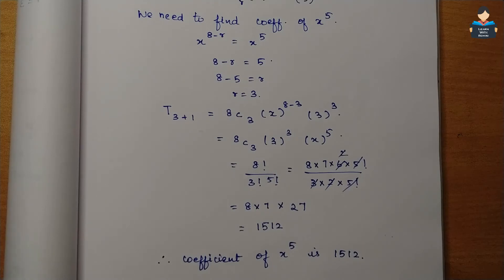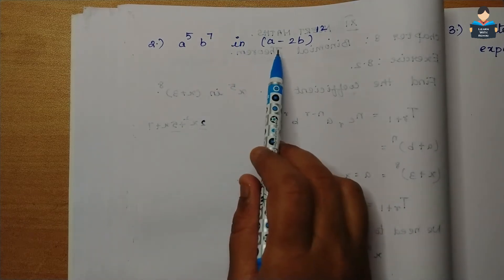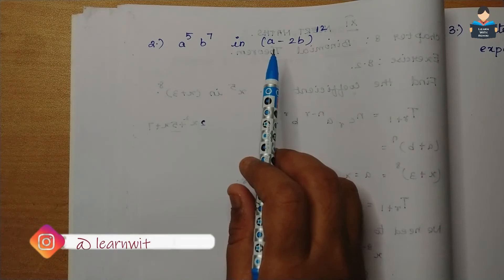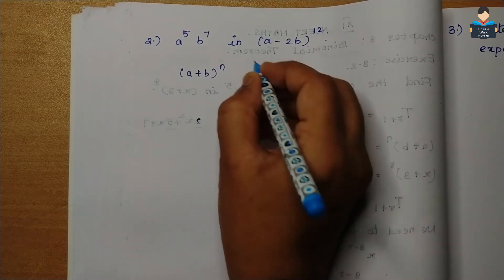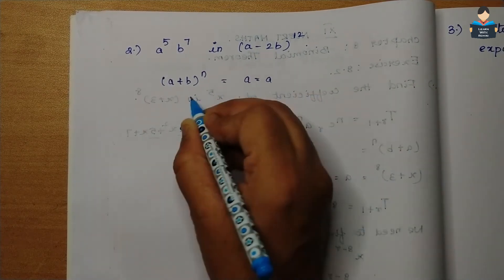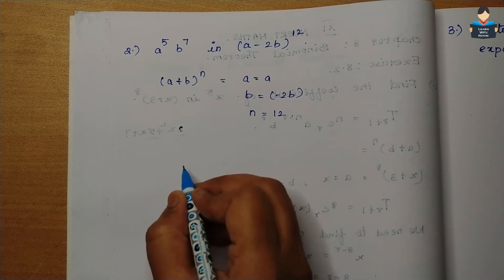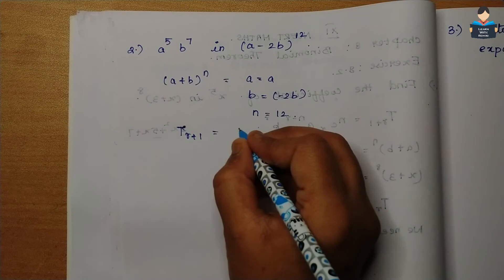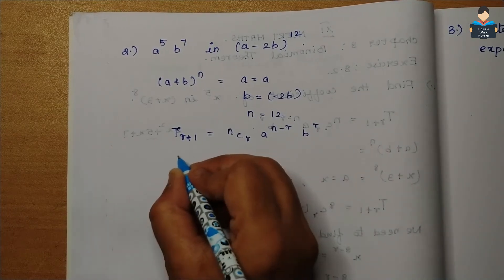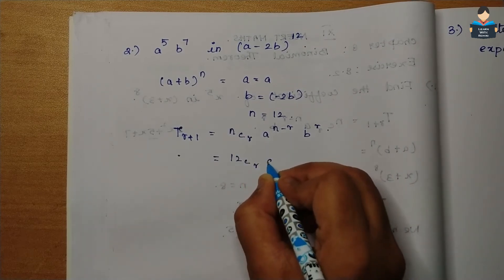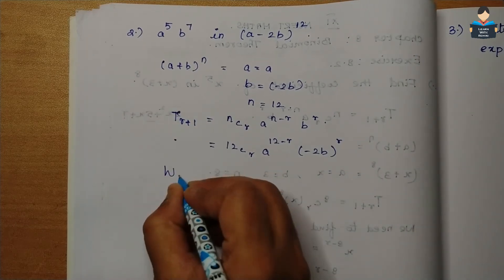Next, the second sum: find the coefficient of a⁵b⁷ in (a − 2b) to the whole power 12. Using the general term formula T(r+1) = nCr · a^(n−r) · b^r, here a is a, b is −2b, and n is 12. Substituting: T(r+1) = 12Cr · a to the power (12−r) · (−2b) to the power r.